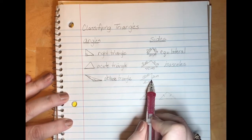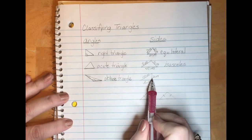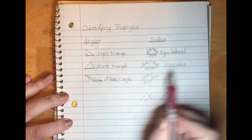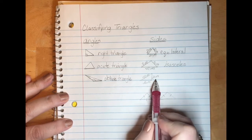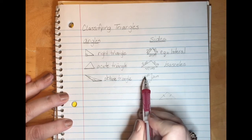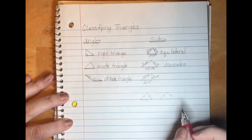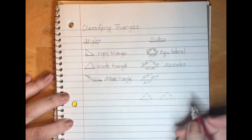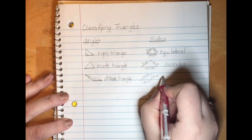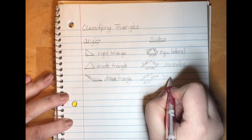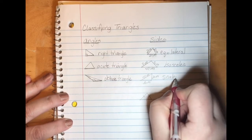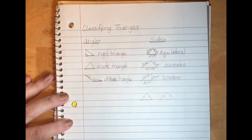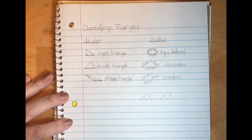The last one is the triangle that has three different sides. In this case we have a two, three, and four centimeter side. When none of the sides are the same we call it a scalene triangle.